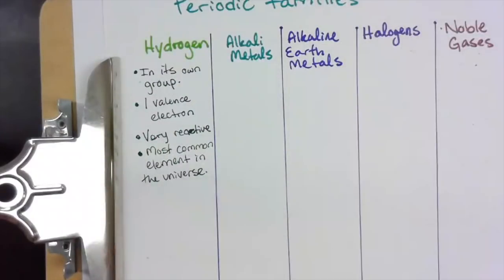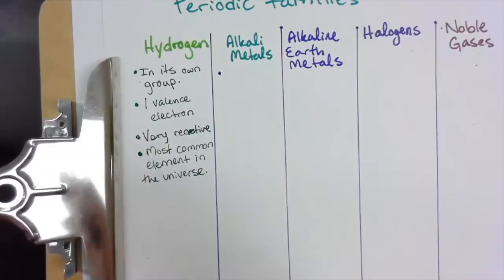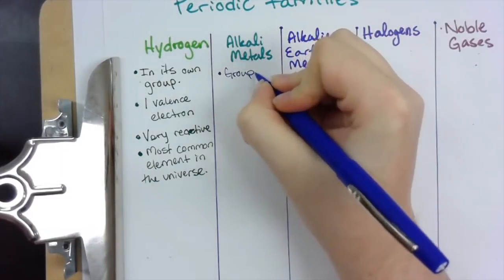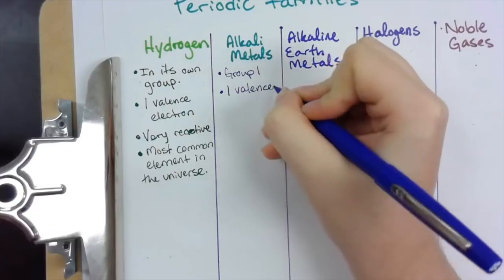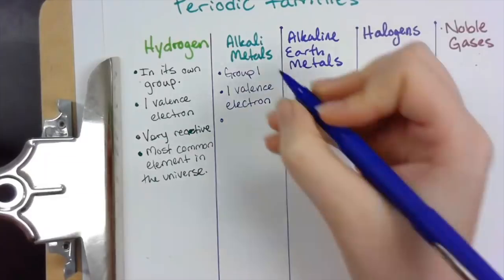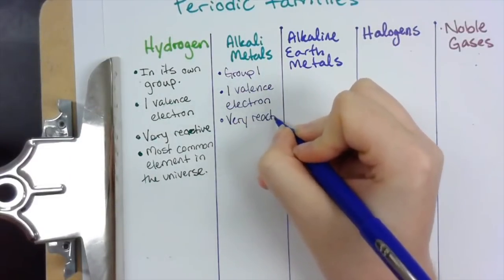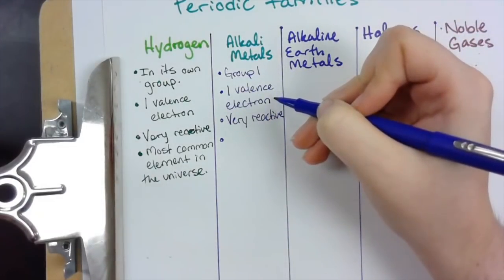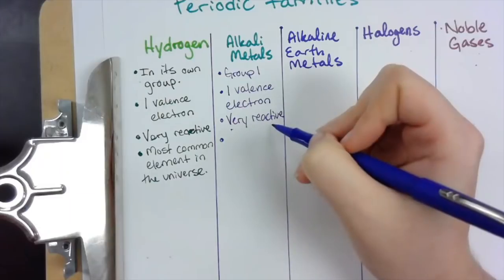A couple of things to know about the alkali metals: they are group one on the periodic table — if you look at the top of that group it'll say one above it. And like I said before, group one has one valence electron. It loves to bond with other stuff to try and get rid of that valence electron, and it's very reactive.